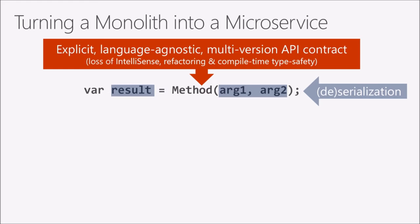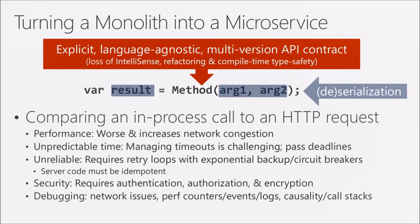And the story gets substantially worse. Comparing an in-process method call to an HTTP network request: performance is worse, network congestion increases, and latency goes up because network requests are unpredictable in time. If you make a network request, what if the server is not running? In a monolith it's running — you're in the same process. With a network request, there might be congestion slowing you down, or the server might not respond for a long time. A lot of times people try to handle this with timeout values.